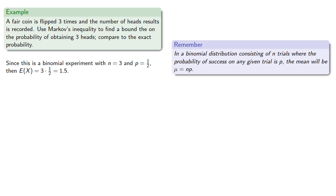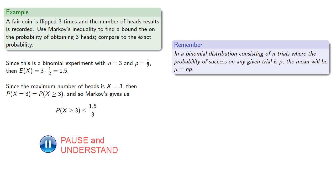Since the maximum number of heads is x equals 3, then the probability of x equals 3 is the same as the probability that x is greater than or equal to 3. And so Markov's inequality gives us that the probability that X is greater than or equal to 3 is less than or equal to 1/2.